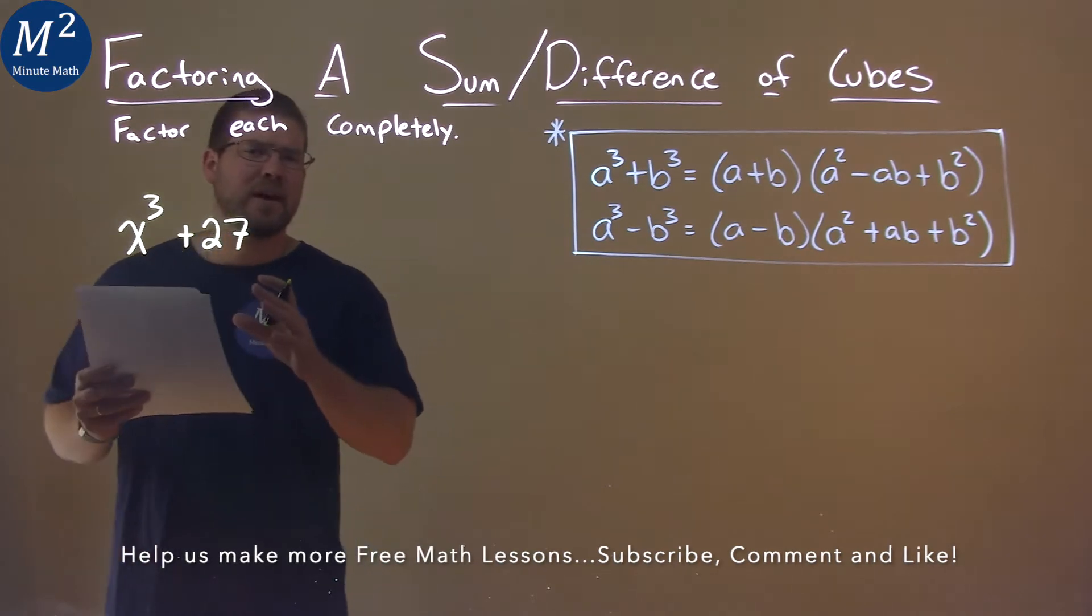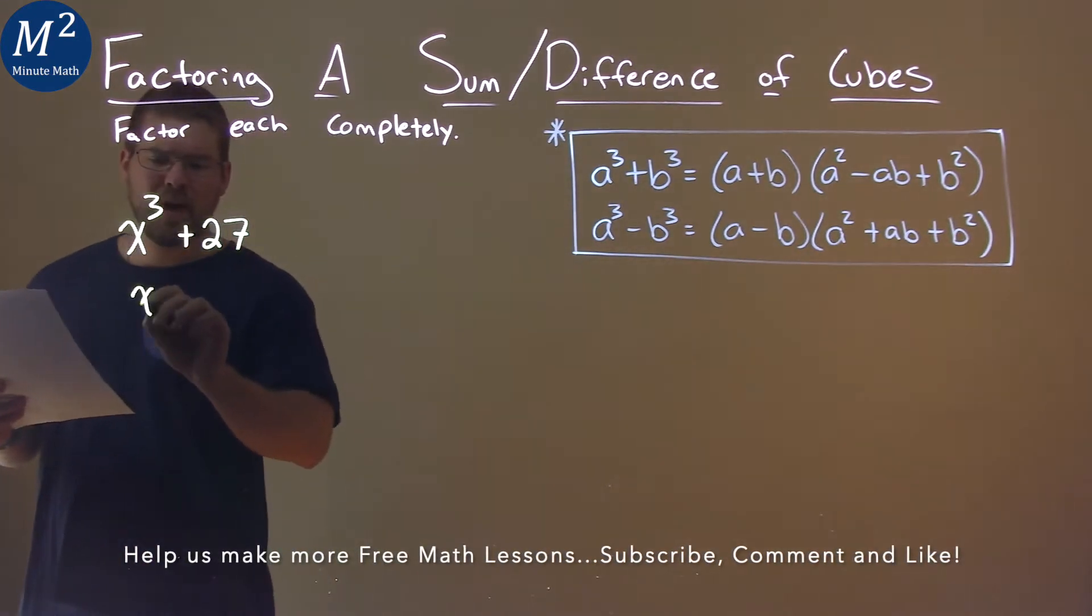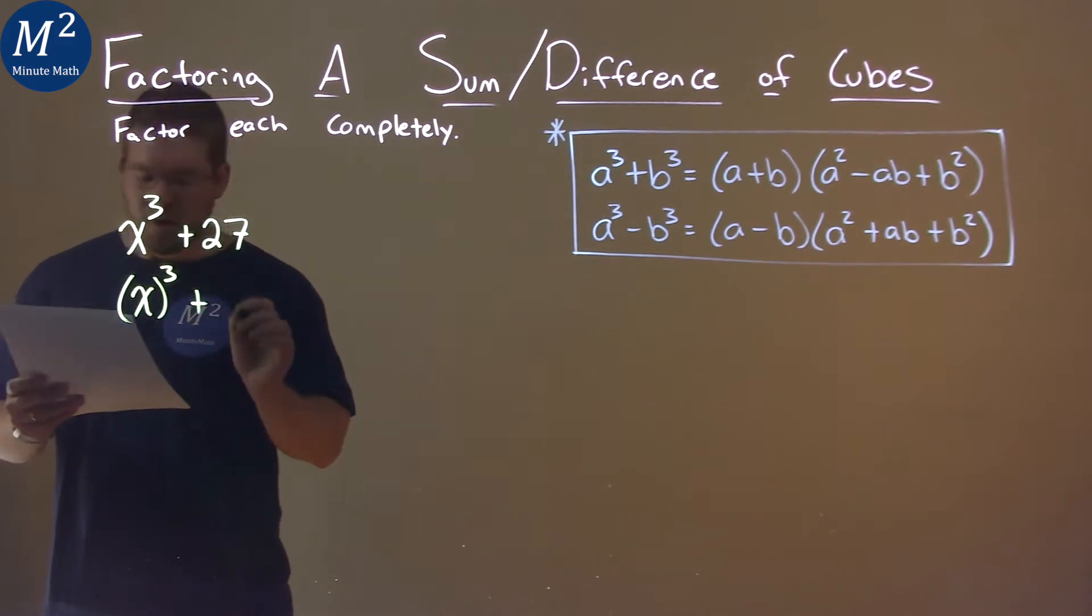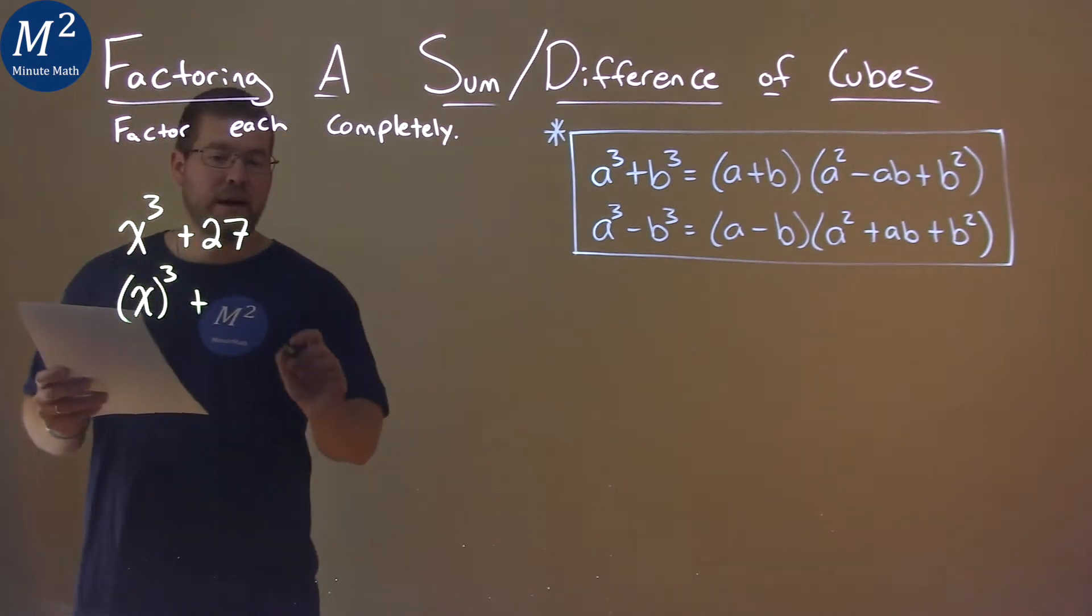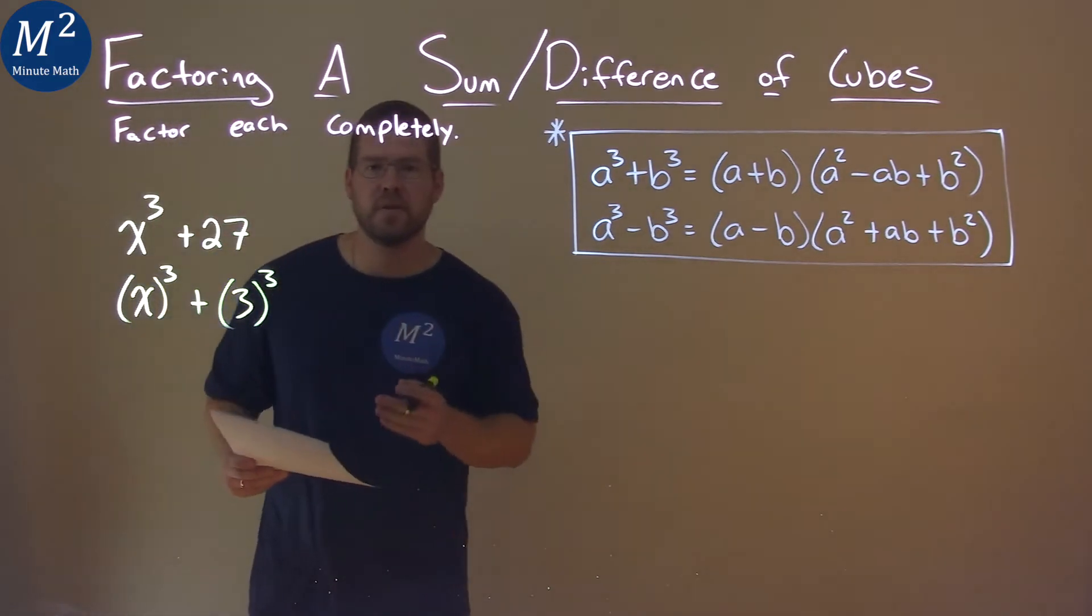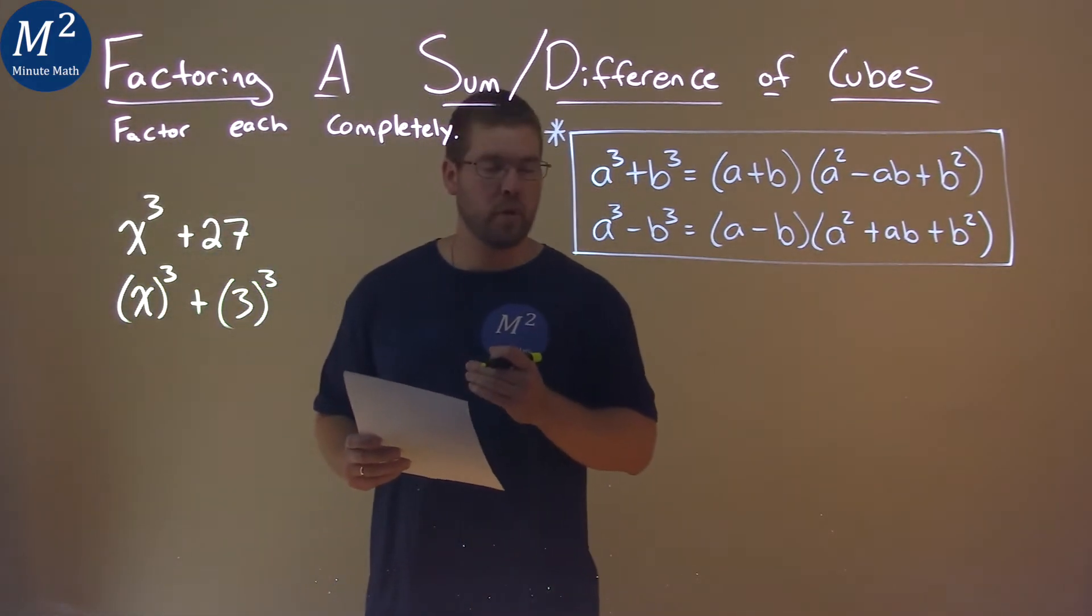We need to break this down as a sum of cubes. x³ is really (x)³, and 27 is the same as 3³. Hopefully you can see that this is like the sum of cubes formula.